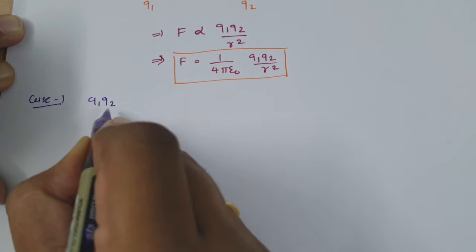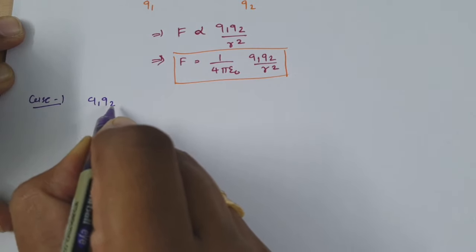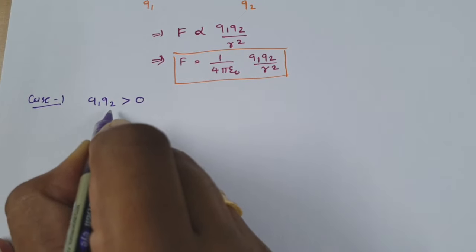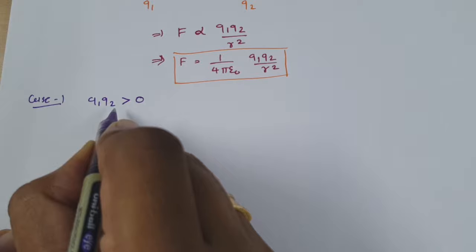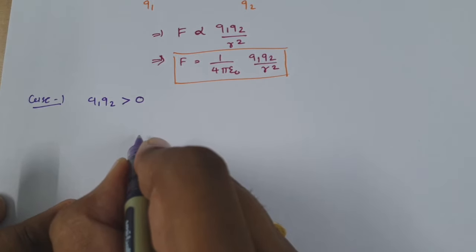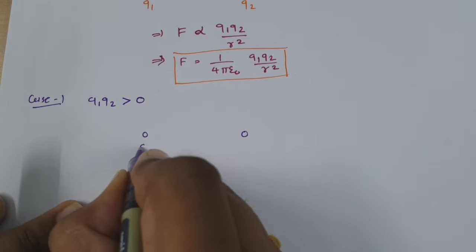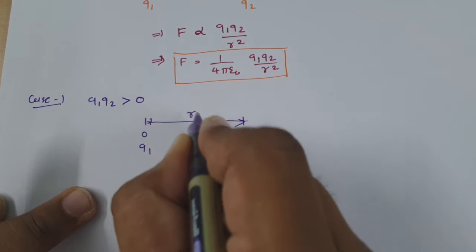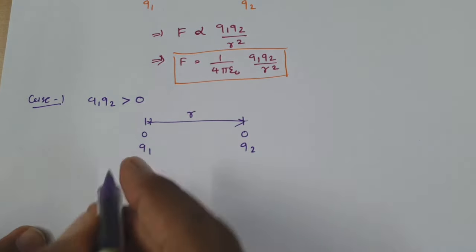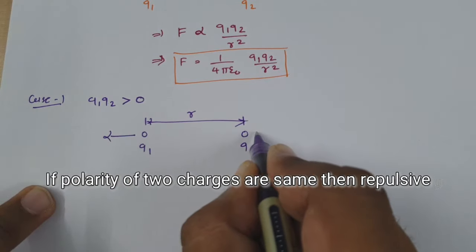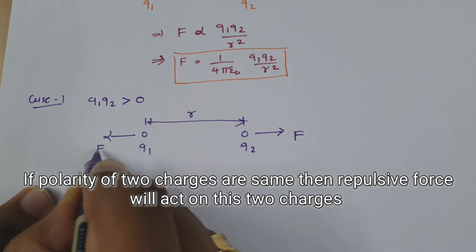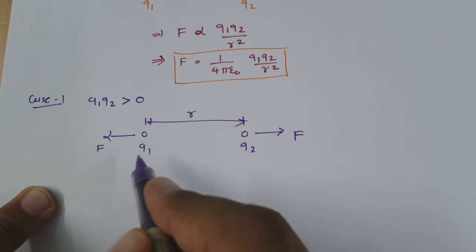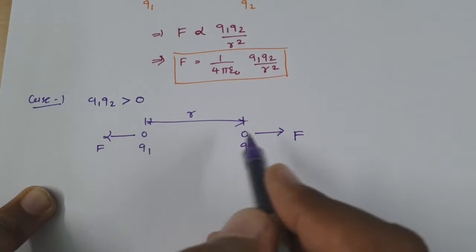If both charges are having the same polarity — like if both are positive — then Q1 × Q2 multiplication will be greater than zero. If both charges are negative, in that case Q1 × Q2 multiplication will also be greater than zero. So in that case, if you observe these two charges Q1 and Q2 with distance R between them, the force will be repulsive. If the polarity of both charges is the same, there will be a repulsive force acting on these two charges.